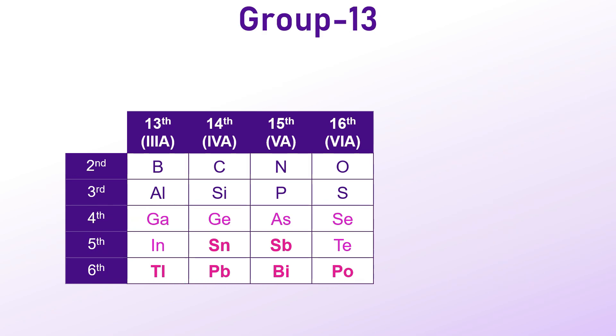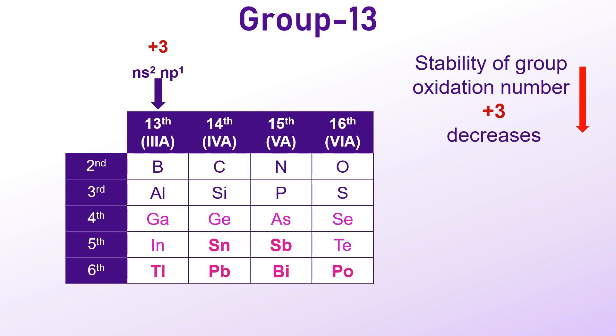For instance, in group 13, otherwise known as group 3A, the typical oxidation state is +3 due to the valence electron configuration of NS2NP1, leading to the loss of all 3 electrons for stability. However, as we move down the group from aluminum to thallium, the stability of +3 oxidation state decreases, while the +1 state becomes more stable.